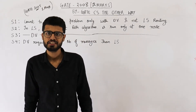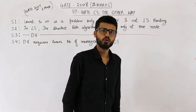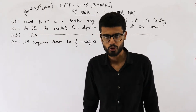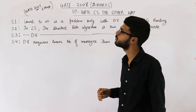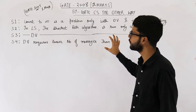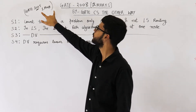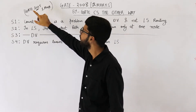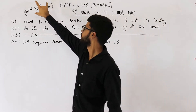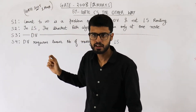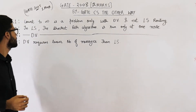Hello dear students, welcome back. This question is from the GATE 2008 exam, it is for two marks and is of the type true/false. They've given you four statements and you need to tell which one is true and which one is false. If you understand this question completely, you will also cover a question from the 2005 exam because statement number one of this question and that 2005 question are exactly the same. Let us see what statement number one is saying.